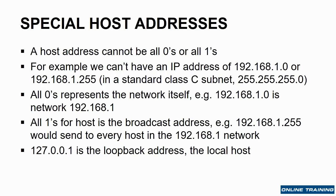If I have a subnet mask of 255.255.255.0, so the host address is the last eight bits, they cannot be all zeros or all ones. This means I cannot have an IP address of 192.168.1.0 or 192.168.1.255. The all zeros represents the network itself — 192.168.1.0 is network 192.168.1. All ones is the broadcast address; if I send a message to 192.168.1.255, it sends it to every host in that 192.168.1 network.